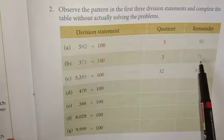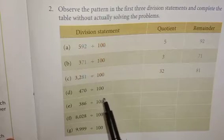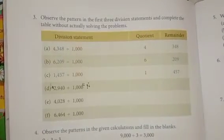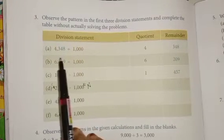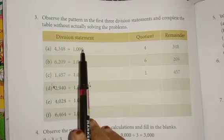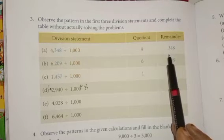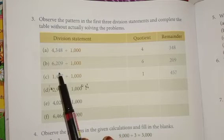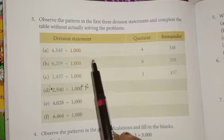So if you divide by 100, the remainder will be the 2-digit number. Next, same way, if you divide by 1000, the remainder will be a 3-digit number. So here, 4348 divided by 1000: the quotient will be only one digit, that is 4, and the remainder will be 348. Here also, 6209 divided by 1000: 6 will be the quotient and 209 will be the remainder. Same way you can do all the other questions.